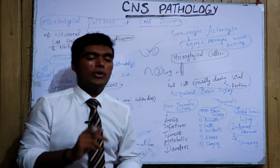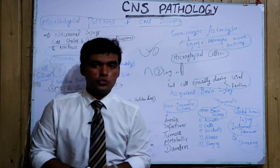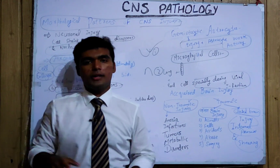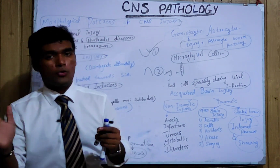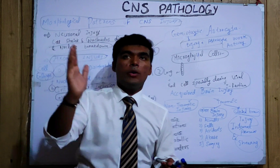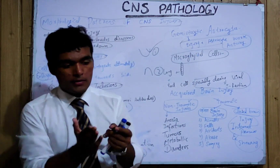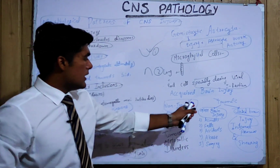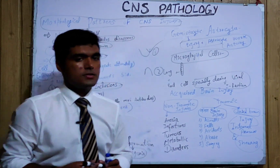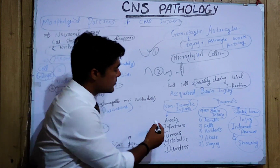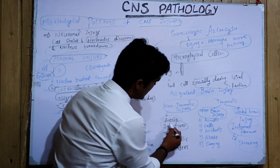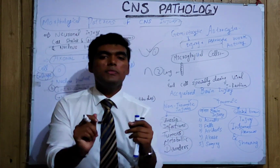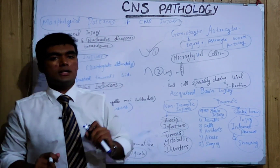Now we have acquired brain injuries. There are two types: traumatic and non-traumatic. Traumatic means a person falls or has an accident, resulting in a trauma situation. Non-traumatic injuries are further classified into anoxia, due to some infection, due to tumour, or due to metabolic disorders — these are all named non-traumatic injuries.